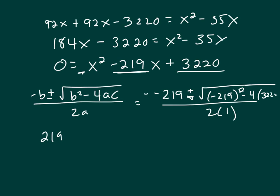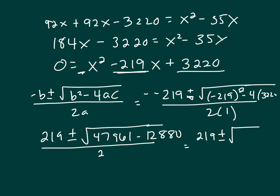So that's going to be a positive 219 plus or minus the square root of 219 squared, which is 47,961 minus 4 times 3,220. And that's 12,880 all over 2. So that's going to be 219 plus or minus the square root of 47,961 minus 12,880. And it's 35,081, and it says round to the nearest minute, so this may not be a whole number.